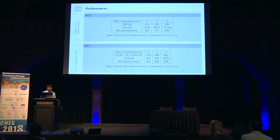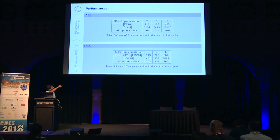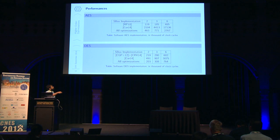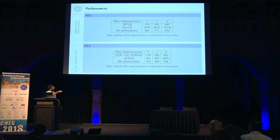Looking at the performance results for the AES and the DES: for the AES case, we are significantly faster than the original solution from Coron, but we are not proposing the most efficient implementation because our technique is generic and the AES S-Box is not a random S-Box — it has structure that can be exploited. In the case of the DES, our solution is much closer to the most efficient known solution.